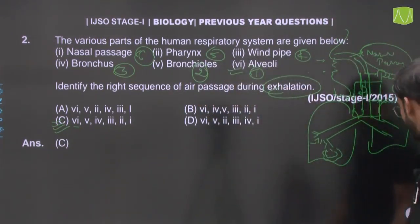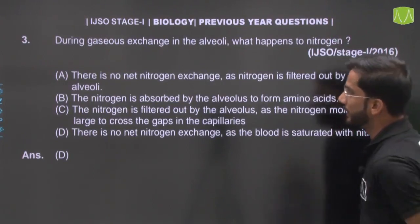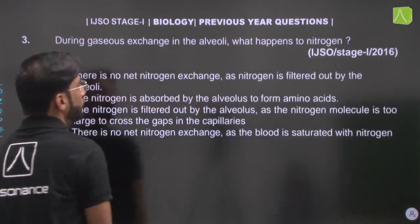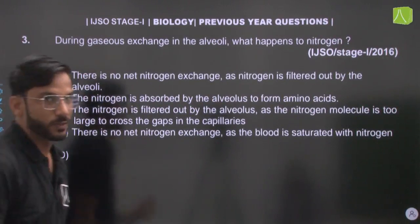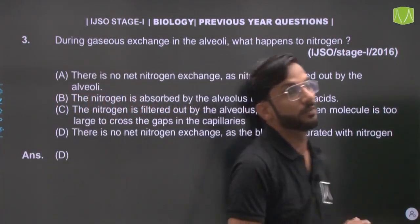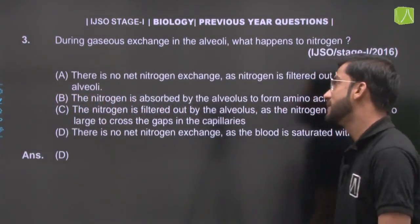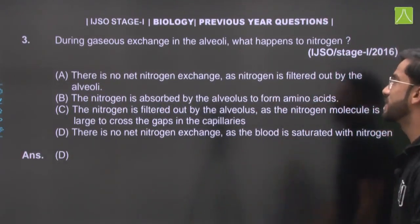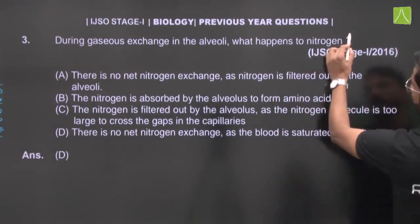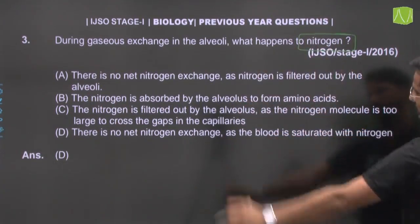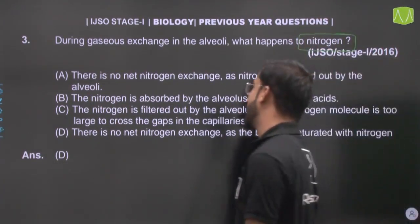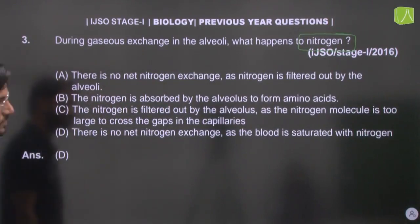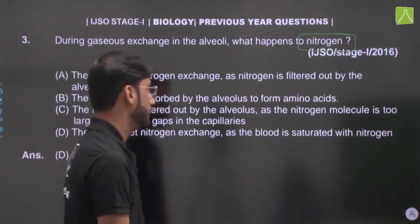Question number 3: During gaseous exchange in the alveoli, what happens to the nitrogen? When gases from the atmosphere or air reach the alveoli, we need to understand what happens to nitrogen. Option A says there is no net nitrogen exchange as nitrogen is filtered out by the alveoli.